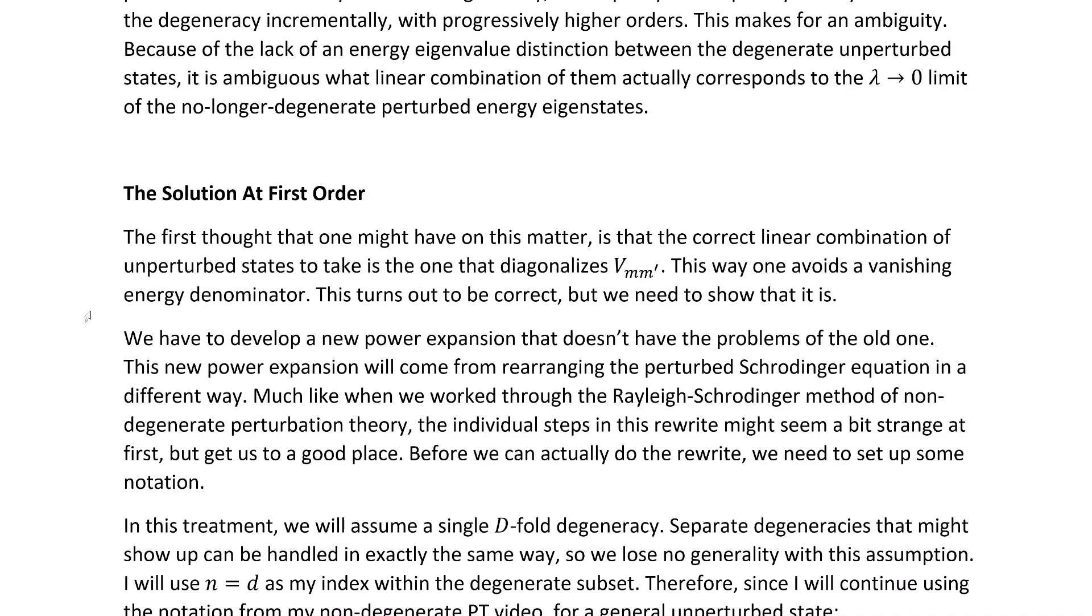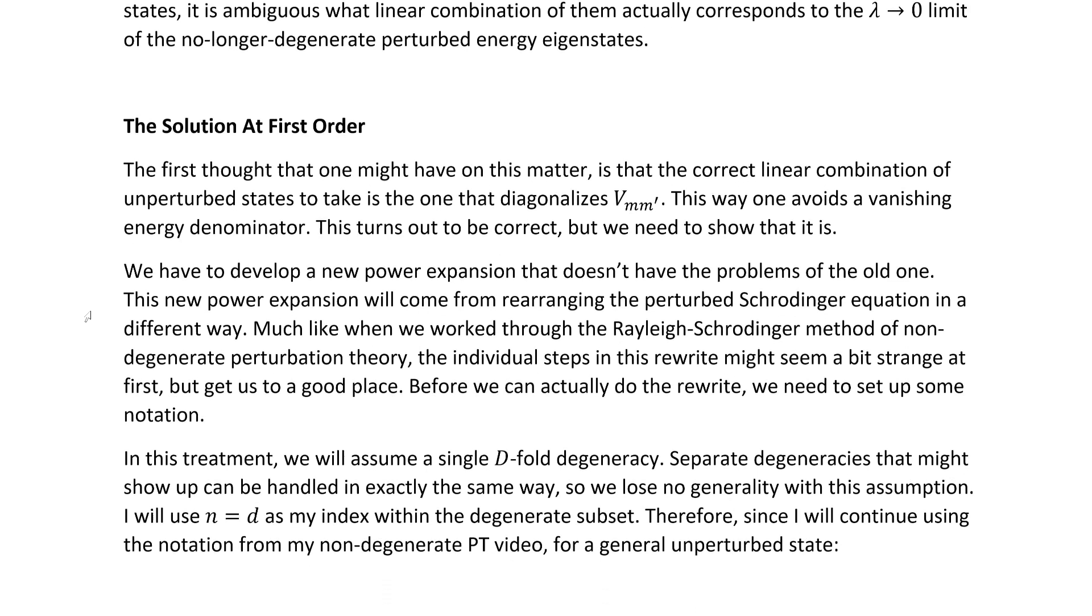The first thought one might have on this matter is that the correct linear combination of unperturbed states is the one that diagonalizes V_MM'. This way, one avoids vanishing energy denominators. This does actually turn out to be correct, but of course, we need to show it. We have to develop a new power expansion that doesn't have the problems of the old one. This new power expansion will come from rearranging the perturbed Schrödinger equation in a different way. Much like when we worked through the Rayleigh-Schrödinger equation of the non-degenerate perturbation theory, the individual steps in this rewrite might seem a bit strange at first, but do get us to a good place. Before we can actually do the rewrite, though, we need to set up some notation.